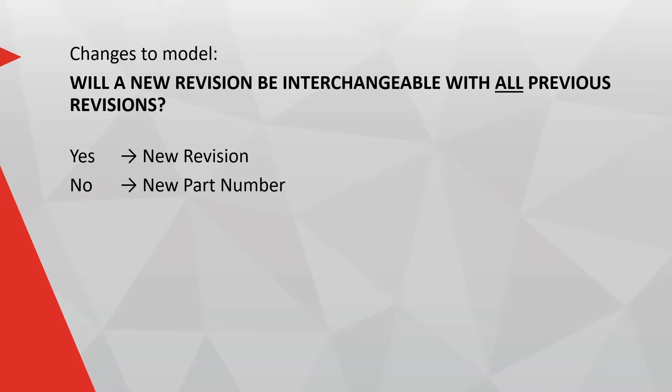Simply creating a new revision of a part is of course quicker and cheaper. However, before we make changes to a model, we will need to ask ourselves the question: will a new revision be interchangeable with all previous revisions of the same part? If the answer is yes, go ahead and create a new revision. If the answer is no, then a completely new part with a new part number needs to be created.